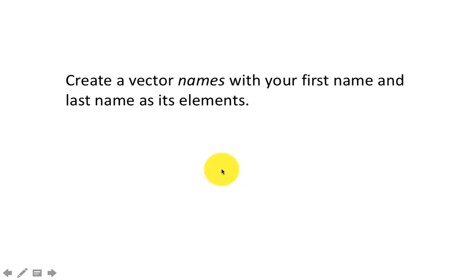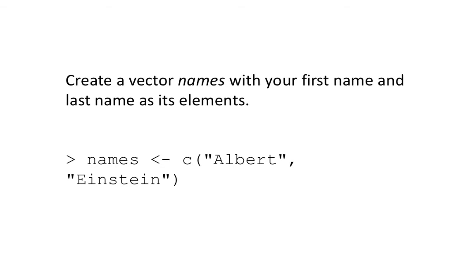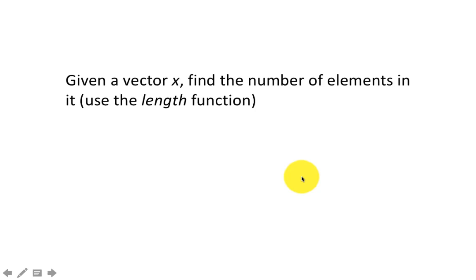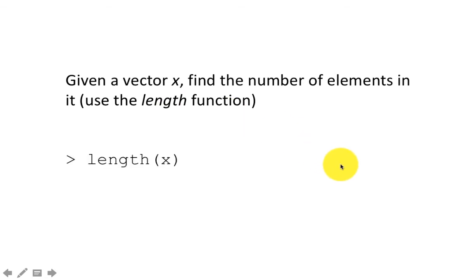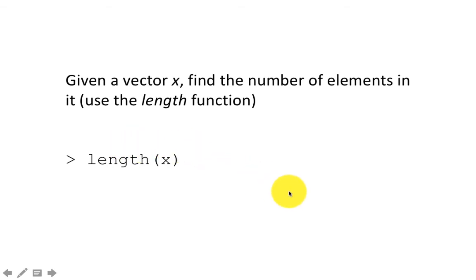Next: create a vector names with your first name and last name as its elements — this is a vector of strings. Assuming you're a very smart person: names <- c('Albert', 'Einstein'). Then: given a vector x, find the number of elements — hint: use the length function. This is something not directly covered in the lectures, but with the hint you can easily do the job: length(x). The length function is given, and you just want to find the length of vector x.